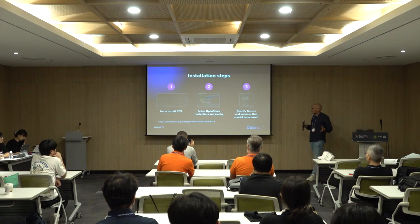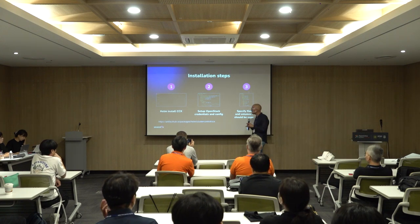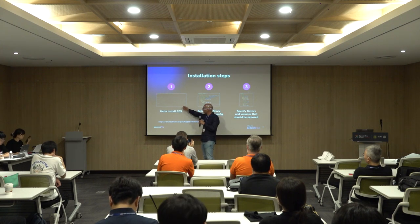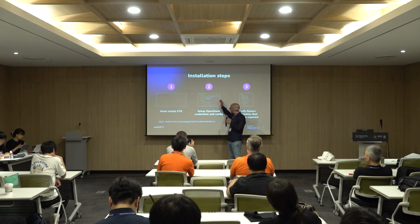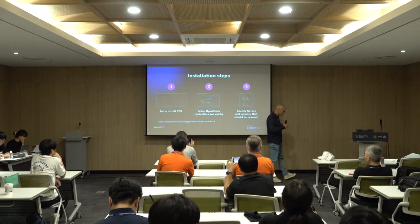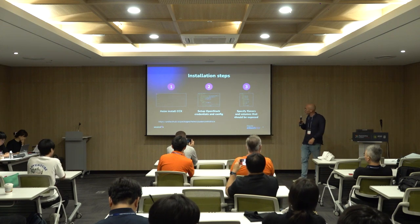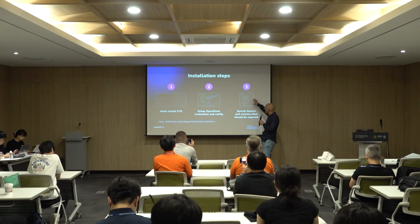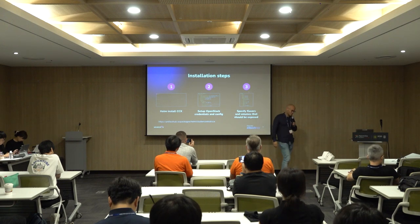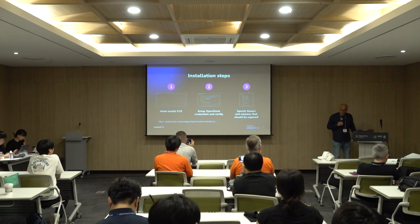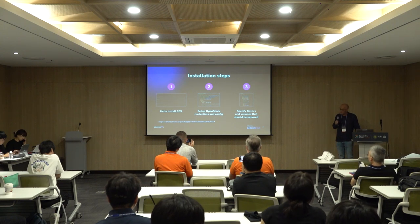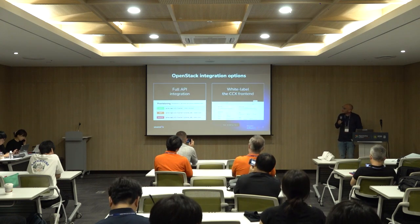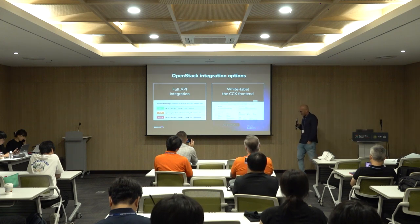Installing it is quite easy to get going. You just use Helm charts, pass in OpenStack credentials, networks you want to use, images, project IDs, and so on. Then you can also specify a configuration where you specify what kind of volumes and instance flavors you want to expose to the end user — for example, in a UI or in Terraform.